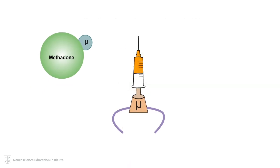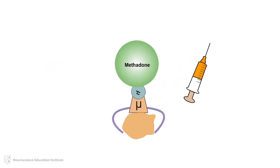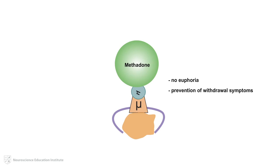Methadone was the first approved MAT for opioid use disorder. As a full agonist, methadone acts at the mu opioid receptor to increase neurotransmission, essentially replacing heroin occupancy of those receptors. However, methadone does not elicit the same euphoric high experienced after using heroin. In this way, methadone allows individuals with opioid use disorder to discontinue use of heroin without experiencing the withdrawal symptoms that come with abrupt discontinuation of heroin.